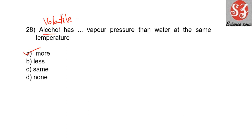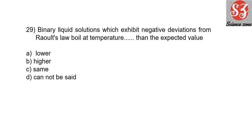Alcohol's vapor pressure is high because water needs to be boiled to reach atmospheric pressure, but alcohol does not. Therefore the answer is option A. Next: 'Binary liquid solution which exhibits negative deviation from Raoult's law boils at temperature ___ than the expected value.' Solutions showing negative deviation boil at higher than the expected value. Remember: negative deviation → higher than expected boiling point; positive deviation → lower than expected boiling point.